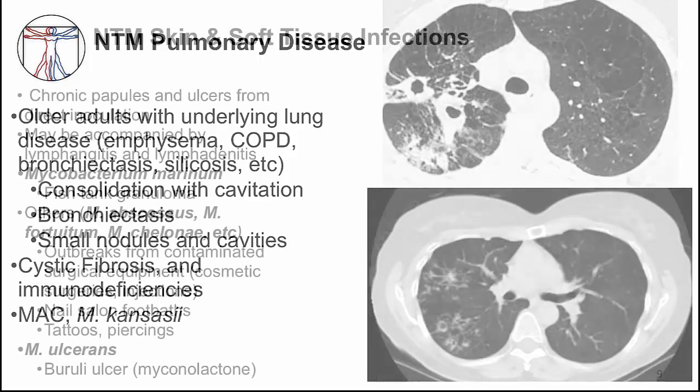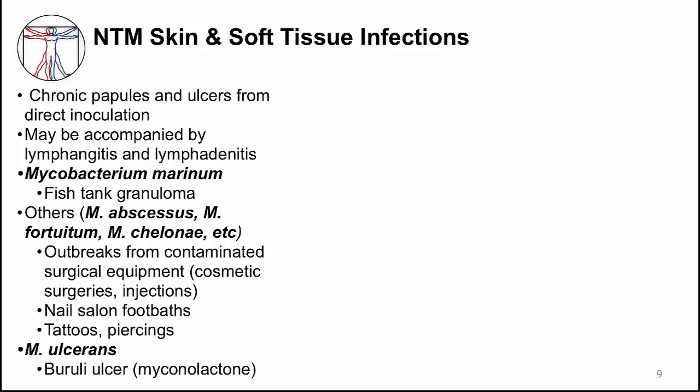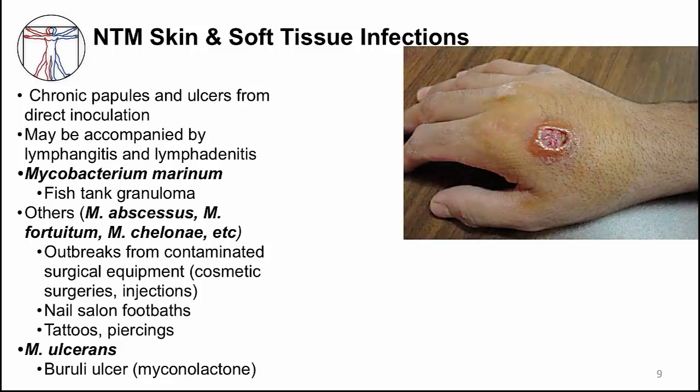NTMs can also cause skin and soft tissue infections, and the mechanism is typically via local trauma. The clinical manifestations are usually papules and ulcers that are chronic in nature. Sometimes these lesions may be associated with local lymphangitis or lymphadenitis. Several different NTMs can cause skin and soft tissue infections. For example, Mycobacterium marinum is a common cause of skin infection in people who take care of fish aquariums — minor trauma to the hand can cause a so-called fish tank granuloma, as you can see in the top photo.